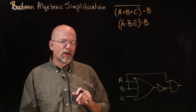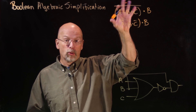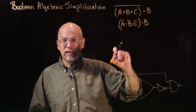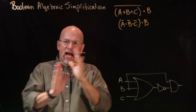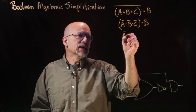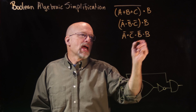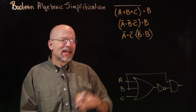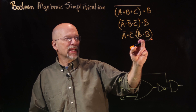Now, where do we go from here? Remember the associative law — it says these parentheses can be moved back and forth if we have the same operation across multiple elements. We can combine them in any order we want. The commutative law also says I can swap things back and forth. So I can swap B-bar and C-bar, and then using the associative law, I can associate those two together first.